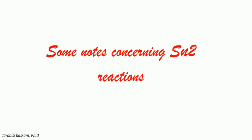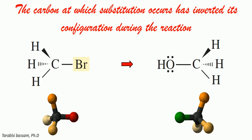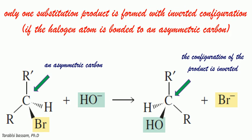The carbon at which substitution occurs has inverted its configuration during the reaction. Only one substitution product is formed with inverted configuration, of course, if the halogen atom is bonded to an asymmetric carbon.